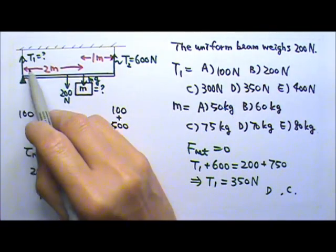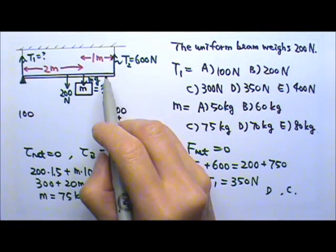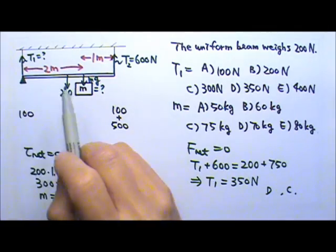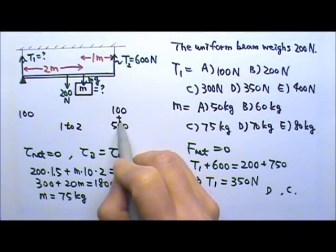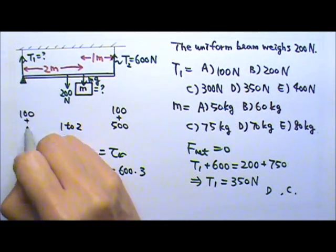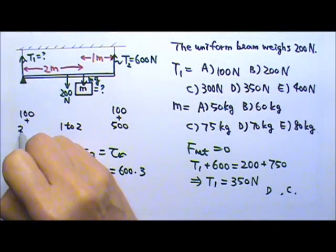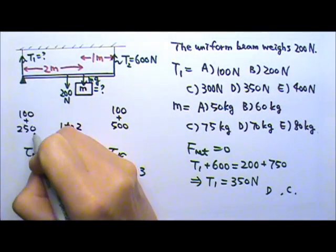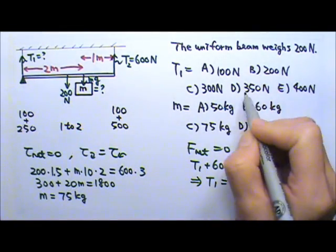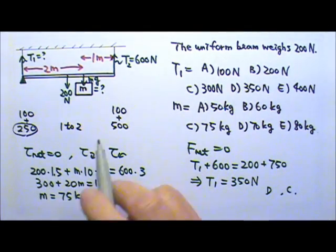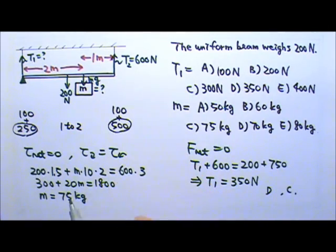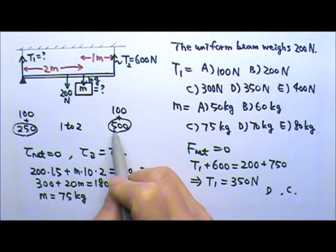And because the distance is 2 to 1, the support force must be 1 to 2. If the support force is 1 to 2 and this side supports 500N, that means the other side must support 250N. That means the tension here is 350N. This is part of the weight of the box. This is another part of the weight of the box. So the total weight of the box must be 750N, so it's 75 kilograms.